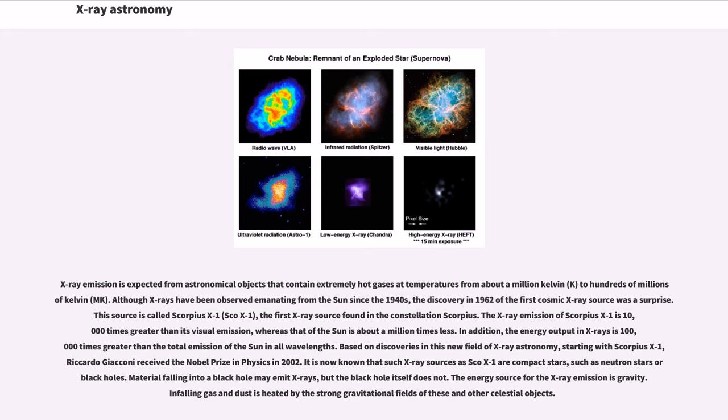Based on discoveries in this new field of X-ray astronomy, starting with Scorpius X-1, Riccardo Giacconi received the Nobel Prize in Physics in 2002. It is now known that such X-ray sources are compact stars, such as neutron stars or black holes. Material falling into a black hole may emit X-rays, but the black hole itself does not. The energy source for the X-ray emission is gravity. Infalling gas and dust is heated by the strong gravitational fields of these and other celestial objects.